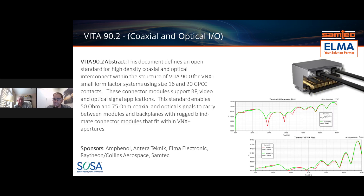VITA-90.2 was one of the enhancements lacking in the prior revision. This covers the floating backplane coaxial and optical interconnects, accommodating size 16 or size 20 RF connectors and cables, both at 50 ohm and 75 ohm — it's not just one impedance but includes language for both. These are traditional blind mate rugged backplane connectors, with insertion loss and return loss plots extending out to about 60 gigahertz for performance on the RF components.